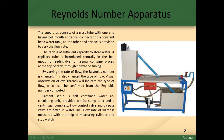The present setup is a self-contained water circulating unit, with a sump tank and a centrifugal pump. Flow control valve and bypass valve are fitted in the water line. Flow rate of water is measured with the help of a measuring cylinder and stopwatch — by timing how long it takes to fill the cylinder, you can compute the flow rate.